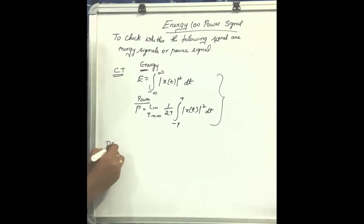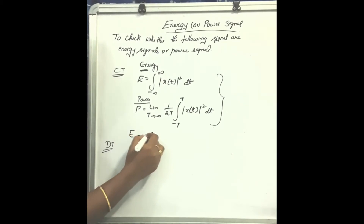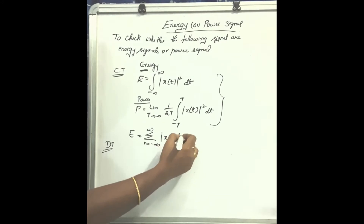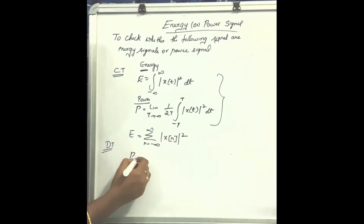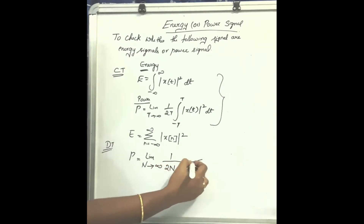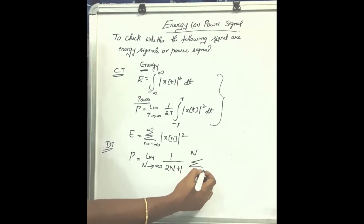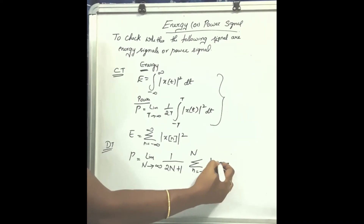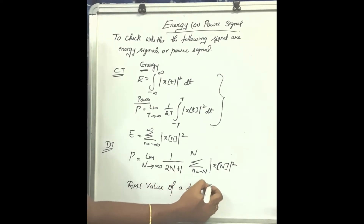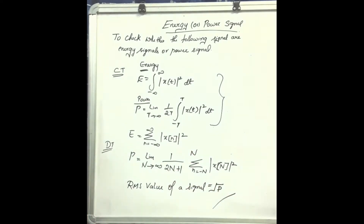For discrete time signals, energy is found as the summation from n equals minus infinity to plus infinity of x(n) whole square. Power is equal to limit n tends to infinity of 1 by (2n plus 1), summation from minus n to n of x(n) whole square. To find the RMS value, root mean square value of a signal, root p is found.